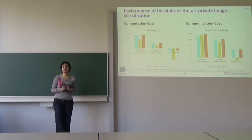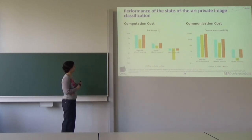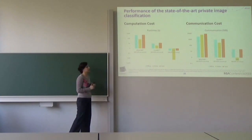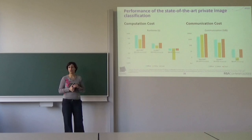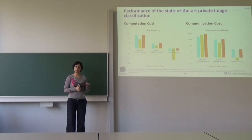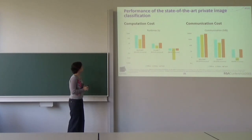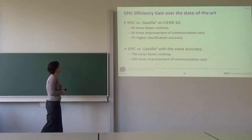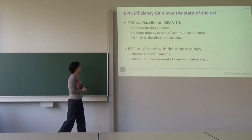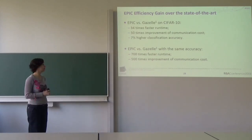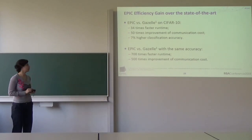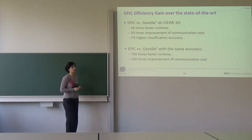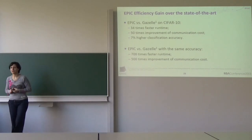We did experiments matching the accuracy of the other two solutions on CIFAR-10. EPIC's best accuracy on CIFAR-10 is 7% higher than the other two, and yet it is way faster. If we match their accuracy of approximately 82%, the simple version of EPIC is 34 times faster in runtime and 50 times better in communication cost, while achieving 7% higher accuracy. When tuned for performance to match Gazelle's accuracy, the solution is 700 times faster with 500 times better communication cost.